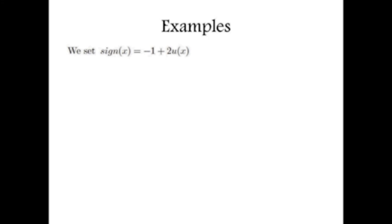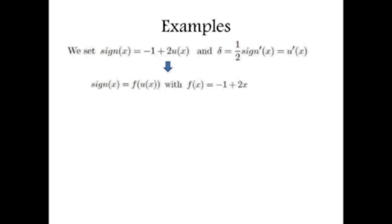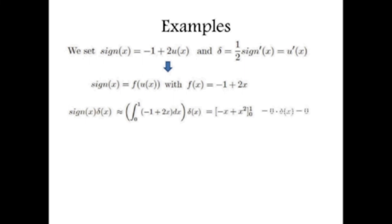We now give some examples. We set sgn(x) = −1 + 2u(x), a distribution equal to −1 for x negative with a jump of 2 at 0. With this definition we can define delta as one-half of sgn-prime, and we get u-prime, which is the original definition of delta in G. Now sgn(x) = f(u) with f(x) = −1 + 2x. We evaluate the product sgn(x) times delta using our formula and associate it to a delta in D-prime, getting zero.